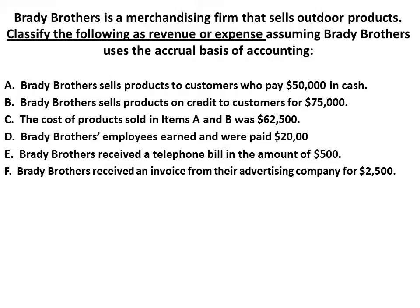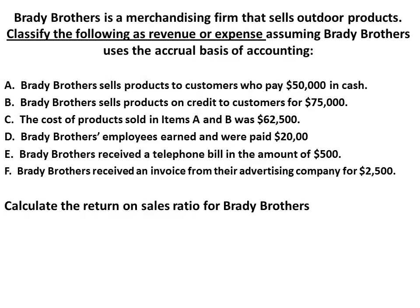Let's continue on to our last one and calculate the return on sales ratio for Brady Brothers. First, we want to classify the following as revenue or expense, assuming the accrual basis. The difference between accrual and cash is that accrual is when the transaction happened; cash is when cash is received or sent out. Brady Brothers sells products to customers who pay $50,000 in cash — that's revenue. Brady Brothers sells products on credit to customers — that's revenue. The cost of products sold on items A and B was $62,500 — that's an expense. Brady Brothers' employees earned and were paid $20,000 — that's an expense. Brady Brothers received a telephone bill of $500 — that's an expense. Brady Brothers received an invoice from their advertising company for $2,500 — that is also an expense.